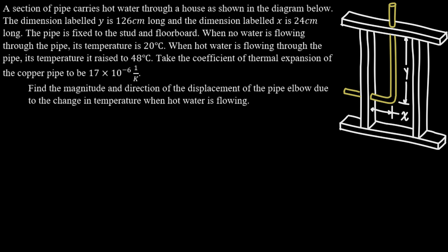So basically what they're saying is that when this copper pipe is at 20 degrees Celsius it's just going to take that perfect L shape, but when it's heated up to 48 degrees Celsius that y dimension is going to get a little bigger and then the x dimension is going to get a little bigger as well. So if we can use the equation we had before to calculate the change in x and the change in y, then we can figure out what the magnitude and direction of the displacement is.